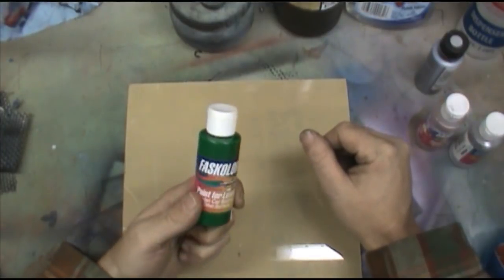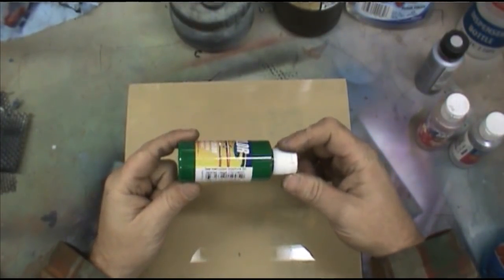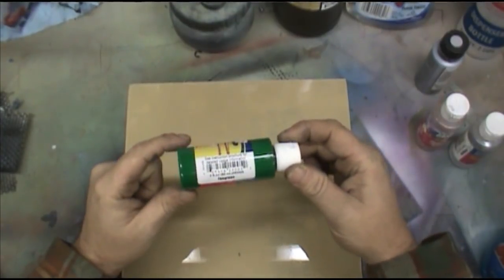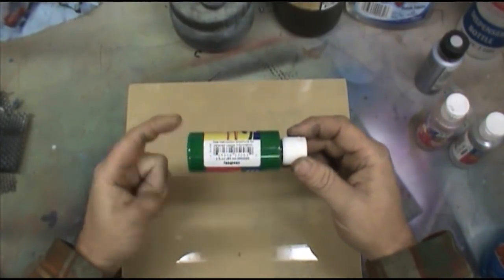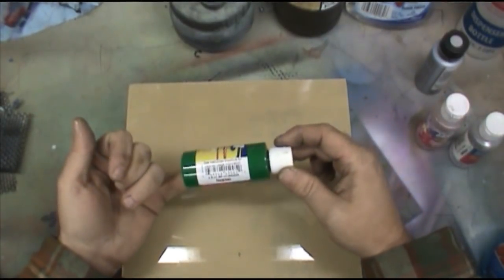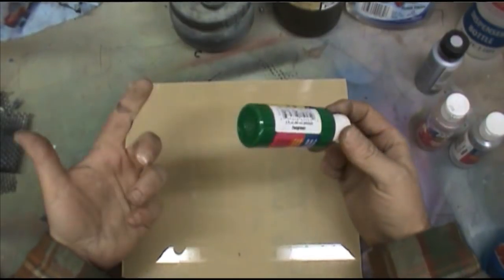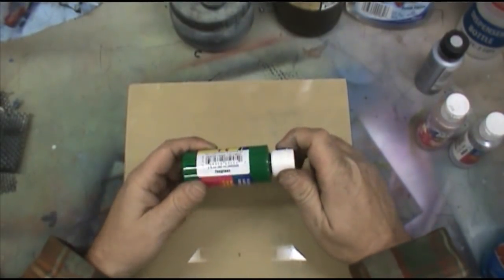I guess the next thing is how thin do we actually thin an acrylic paint? A lot of people are going to tell you that you thin an acrylic paint to the consistency of milk. Well, my question is, is that skim milk, two percent, whole? Is that with vitamin D? You know, what kind of milk are we talking about here?